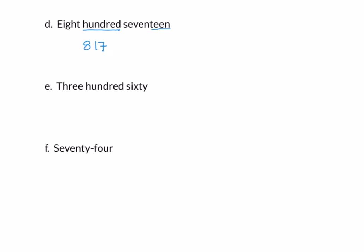Example e: three hundred sixty. Three goes in the left column. We have the suffix 'ty,' so six goes in the middle column. There is no number by itself, so we need a zero in the right column. Three hundred sixty is written 3-6-0. Example f is not a three-digit number — there is no mention of 'hundred,' so we just translate 74. The 'ty' gives us a seven in the middle column, followed by four in the right column. We do not need a digit in the left column.